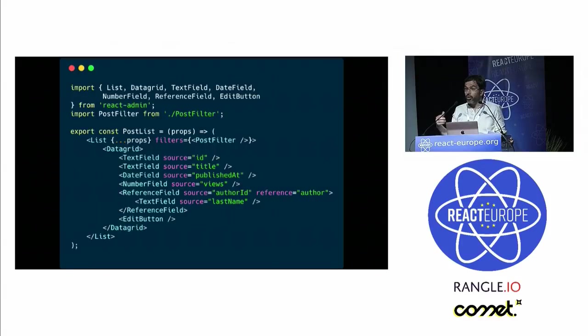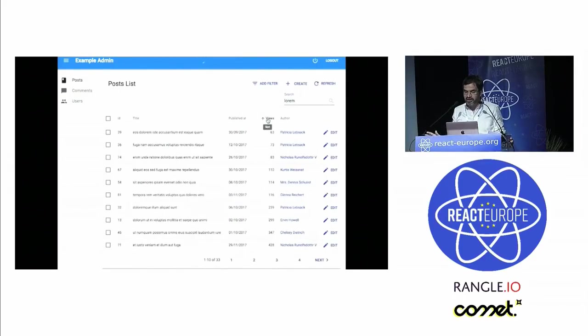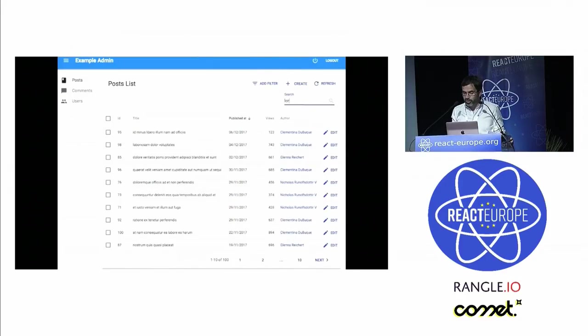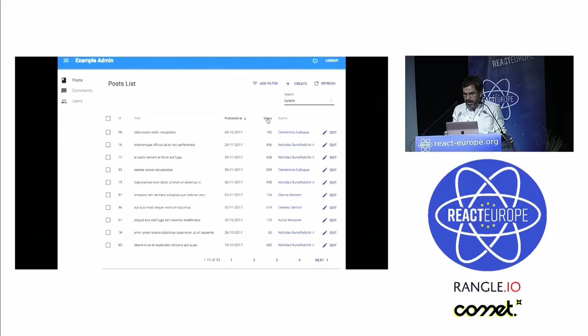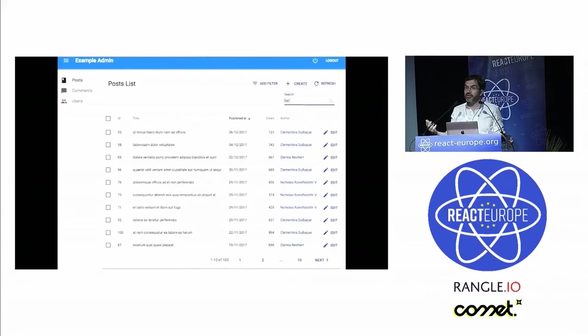And combine all those components together, and you can define very quickly an admin in a declarative way, and you'll get for free pagination, sorting, and filtering. And here is a demo of this code plugged with a real API. There's no more code than what I just showed you previously. There's only 18 lines of code, but you already have a working admin plugged to an API. And that's super fast also thanks to optimistic rendering and a local cache.